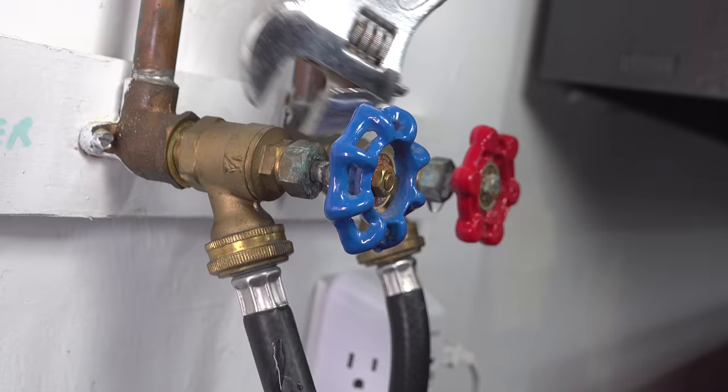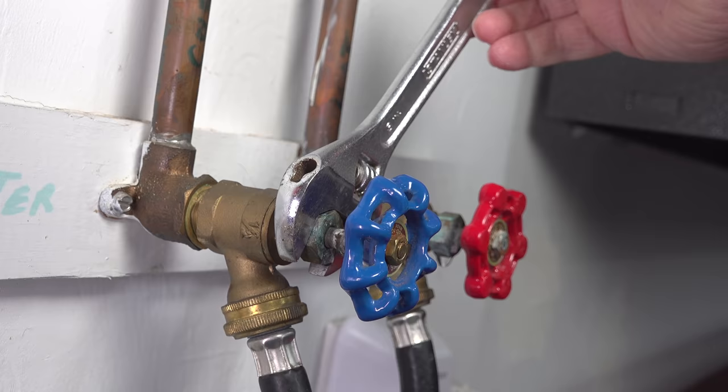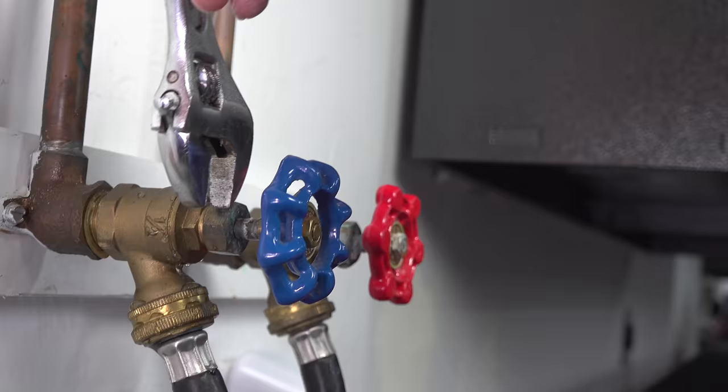Tighten that packing nut up enough so that you eliminate your leak but you want to make sure that the valve handle will still operate. Check the handle to make sure it still works and if it's too tight, just back that nut off a little bit and eventually you'll find the happy medium where your leak is gone and you can still operate the valve.